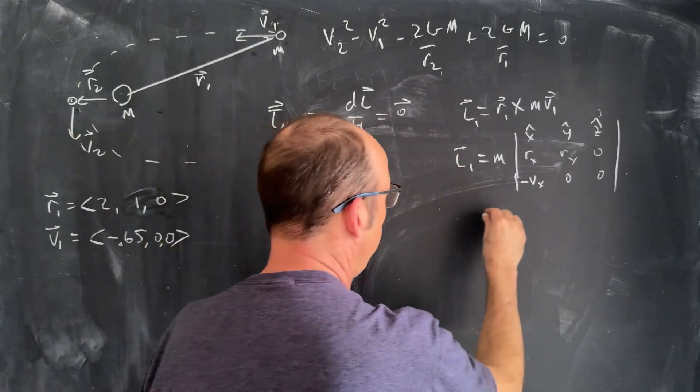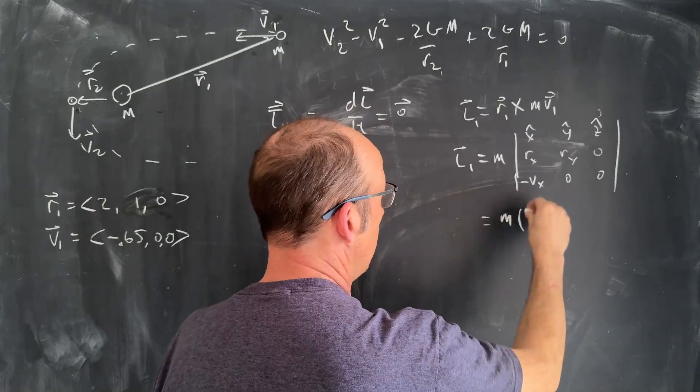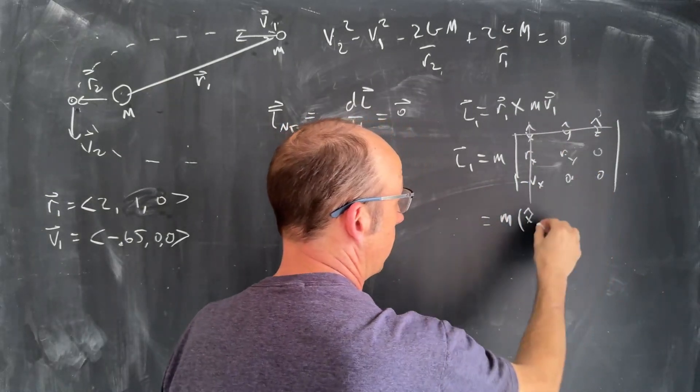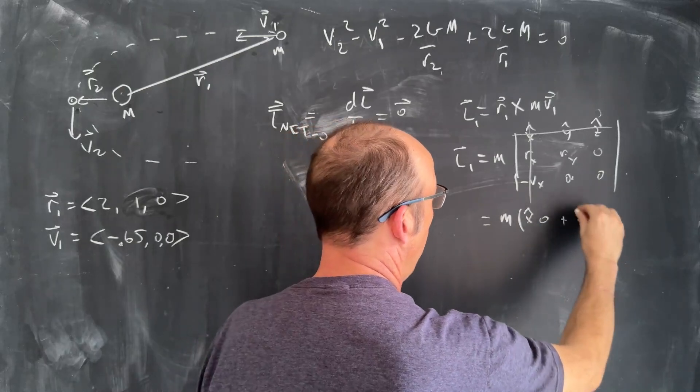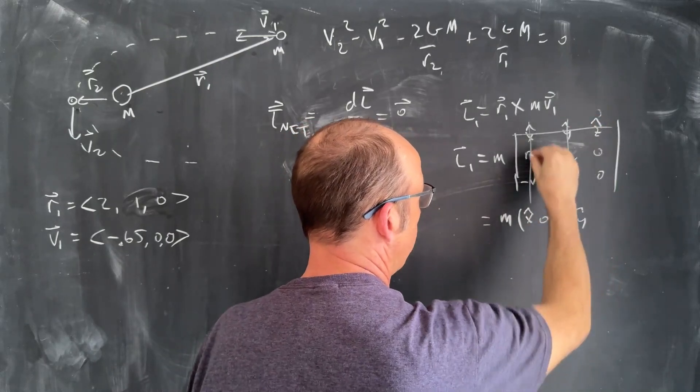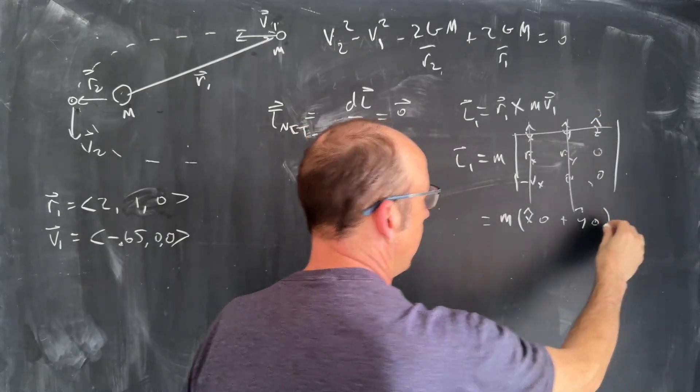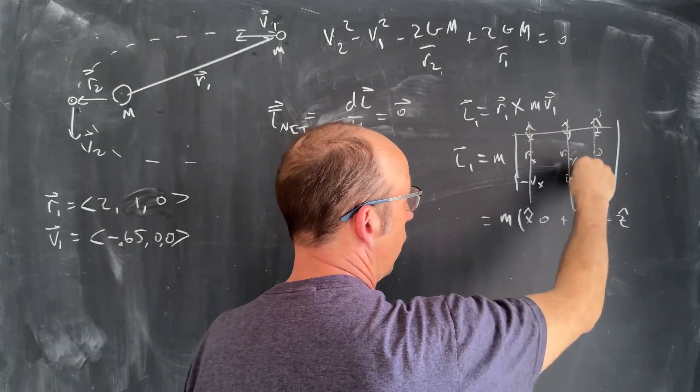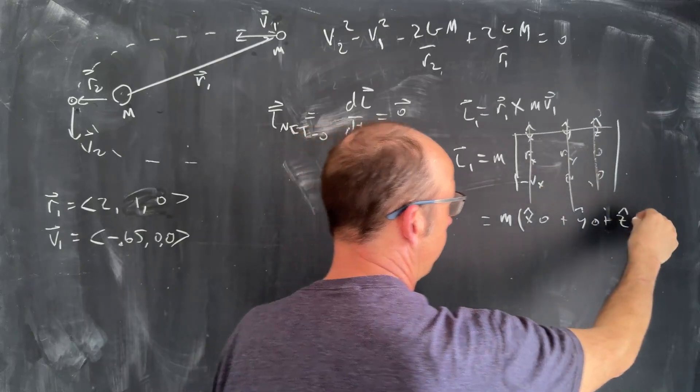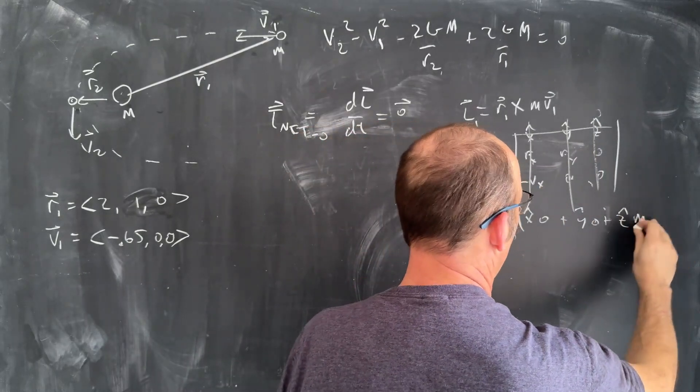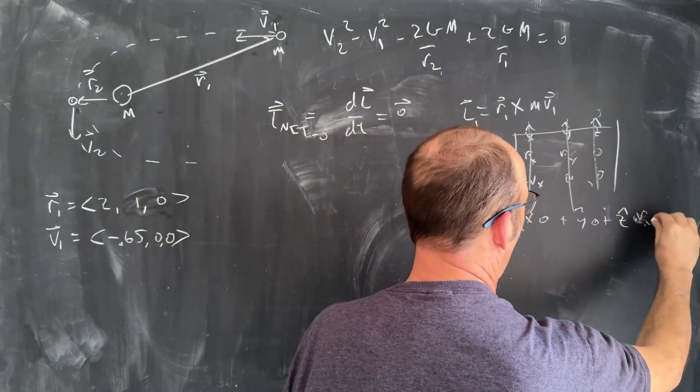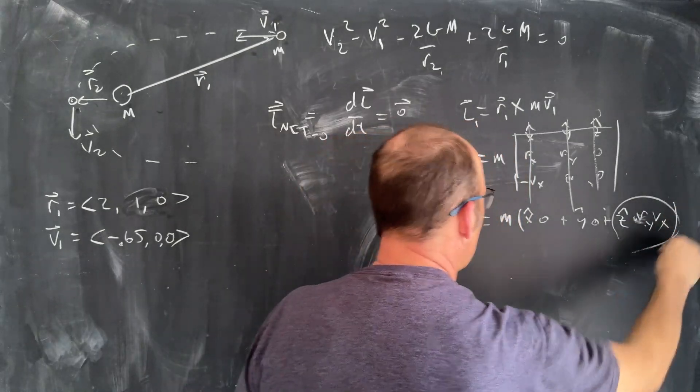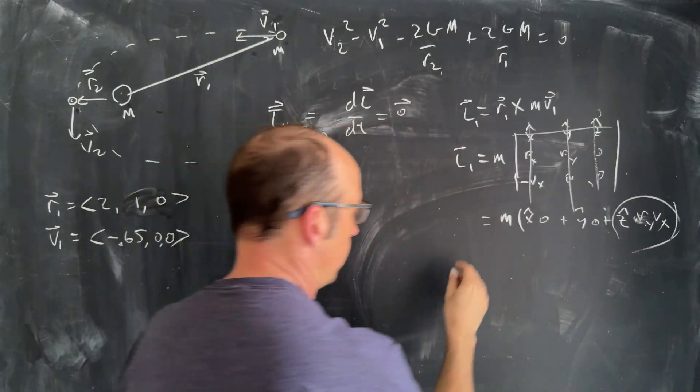You don't really have to use the negative. Now when I take the cross product, I get the mass times x hat and I cross out that and I get zero, zero, zero. Plus y hat, cross that out and I get zero, zero, zero. So now I just have the z hat. So z hat is going to be zero and then minus a negative. So it's going to be m r_y v_x.